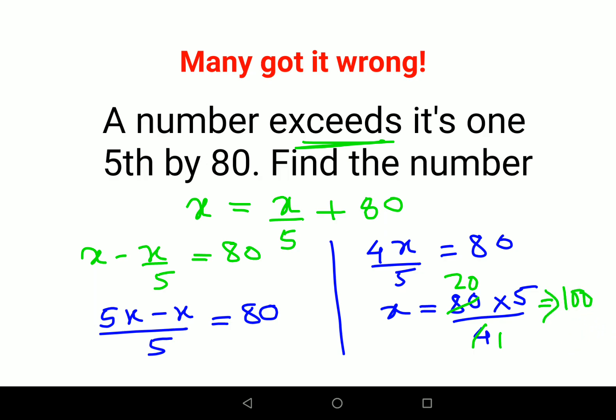20 into 5 is 100, therefore I can say the number is nothing but just 100. And now we will see that the number exceeds its one-fifth, means 100. Your LHS is 100, and we'll see whether your RHS is matching this. So 100 upon 5 is 20, 20 plus 80 is also getting you 100.